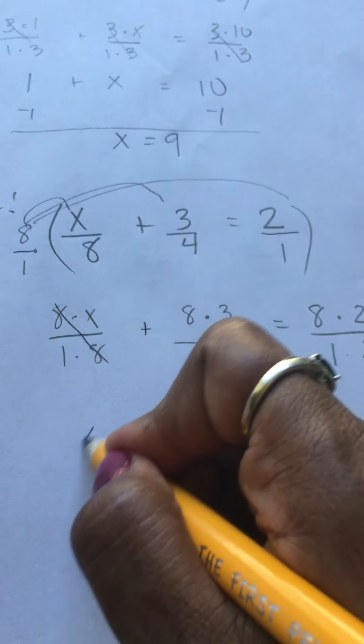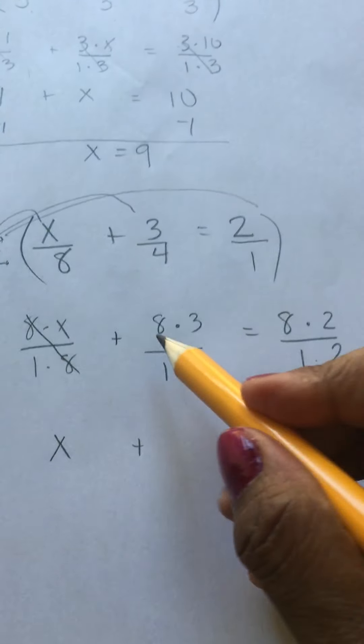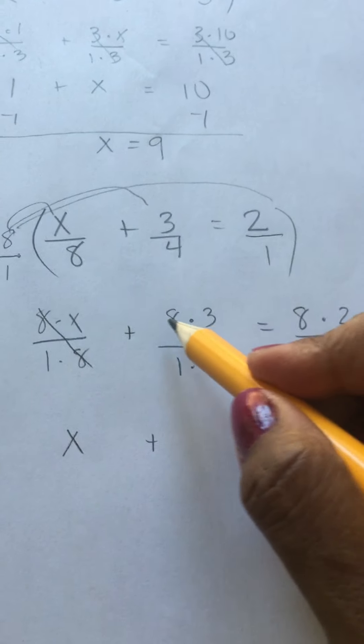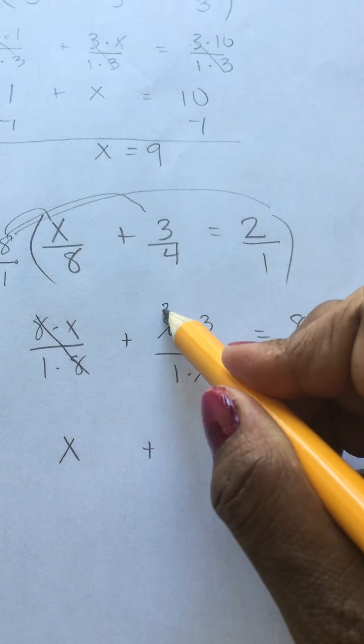The 8s cancel out. We have x plus, oh, you don't see an 8 down here, do you? But 8 can divide by 4, so that becomes a 1 and that becomes a 2. What's 2 times 3? 6.